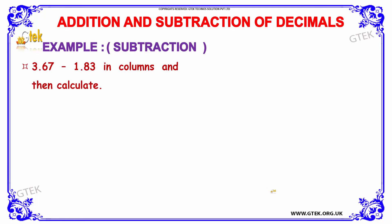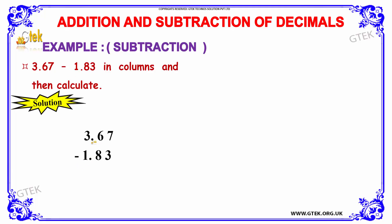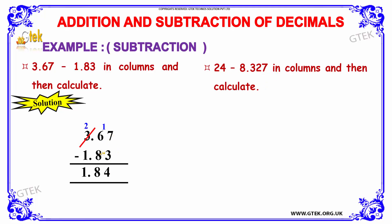Let's move on to other examples in decimal subtraction. The question we have here is 3.67 minus 1.83. The solution: we have written 3.67 minus 1.83. When we subtract 7 minus 3, it's 4.